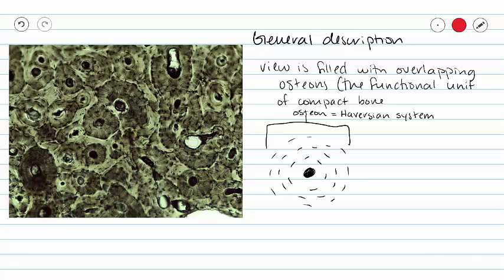Right in the middle of our osteon, we have something called a central canal. Sometimes a central canal is called a Haversian canal. The central canal is going to house our blood vessels in our osteon.